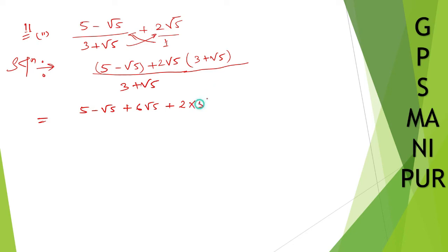Divided by 3 plus root 5. Now 5 to the 10, so 10 plus 5 is 15 minus 6, 6 minus 1 is 5. So plus 6 minus 1, 5 root 5 divided by 3 plus root 5. 3 into 5, now you take common 5, so it's 15 plus 5 root 5 divided by 3 plus root 5.